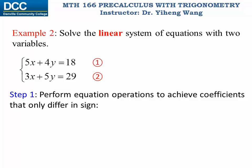For equation one I'm going to multiply it by negative 3, which means that every term in equation one is multiplied by negative 3. Therefore the entire equation now becomes negative 15x minus 12y, and that equals to, for the right hand side, 18 multiplied by negative 3, negative 54.